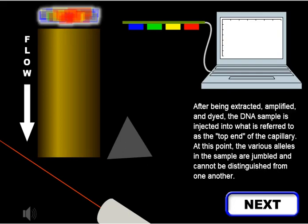After being extracted, amplified, and dyed, the DNA sample is injected into what is referred to as the top end of the capillary. At this point, the various alleles in the sample are jumbled and cannot be distinguished from one another.